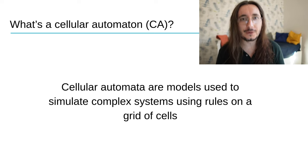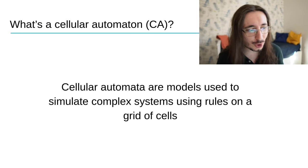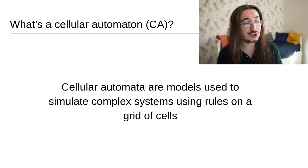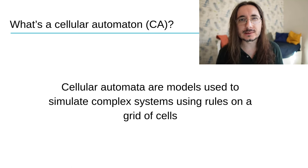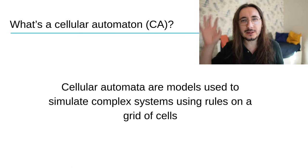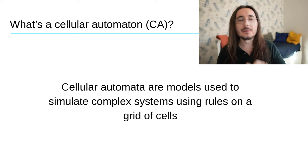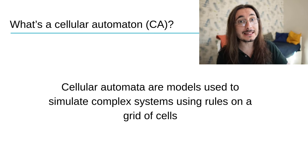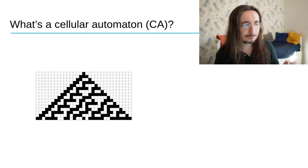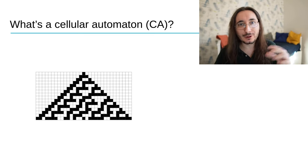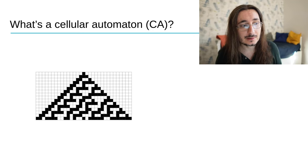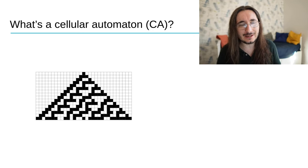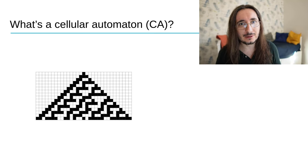What's a cellular automaton? Well, cellular automata are models used to simulate complex systems using rules on a grid of cells. I know this may be a little bit vague as a definition, so let me just make this super easy by giving you a visual representation of your typical cellular automaton. Here you have it. It's a simple grid. You have a lot of cells and cells can be either on or off, and you get very nice patterns.